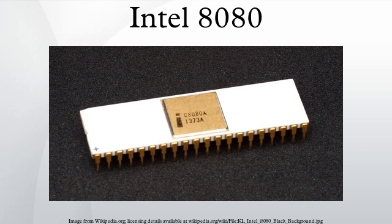The 8080 integrated circuit used non-saturated enhancement load NMOS gates, demanding extra voltages. It was manufactured in a silicon gate process using a minimum feature size of 6 micrometers. A single layer of metal was used to interconnect the approximately 6,000 transistors in the design, with the higher-resistance polysilicon layer implemented with transistor gates. The die size was approximately 20 mm².